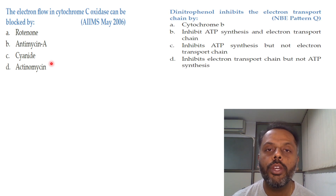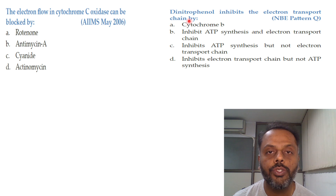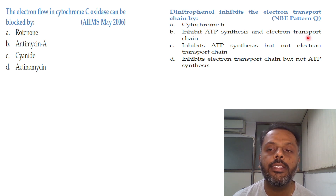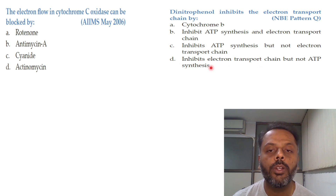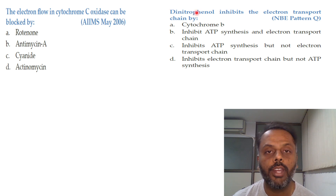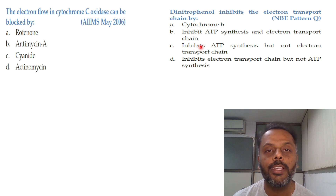Third question: dinitrophenol inhibits the electron transport chain by — options are: inhibits cytochrome B; inhibits ATP synthesis and ETC both; inhibits only ATP synthesis but not ETC; or inhibits ETC but not ATP synthesis. Dinitrophenol is an uncoupler of oxidative phosphorylation. Uncouplers inhibit ATP synthesis but not the electron transport chain itself. So the correct answer is C.